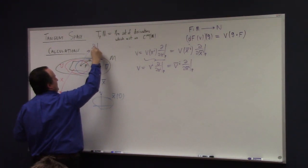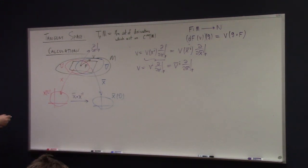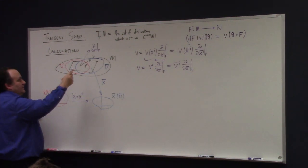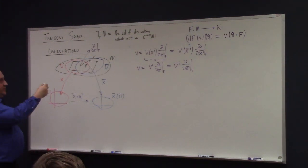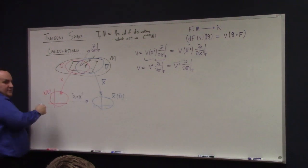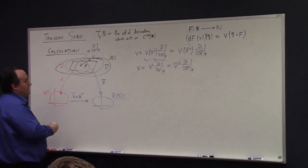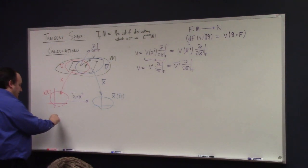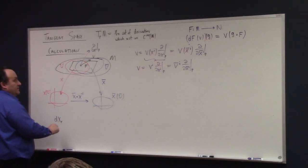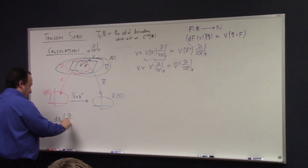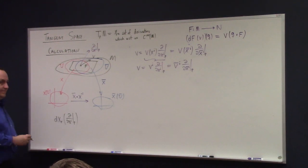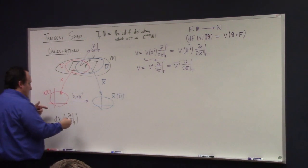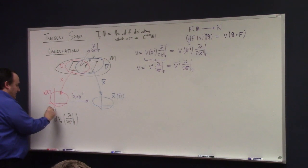We can picture ∂/∂x^i at p as being in the tangent space. One thing we might calculate is the push forward of this coordinate derivation. How would we push that coordinate derivation down? Something like dx at the point p of ∂/∂x^i at p — feed it a smooth function f in C∞(Rn).